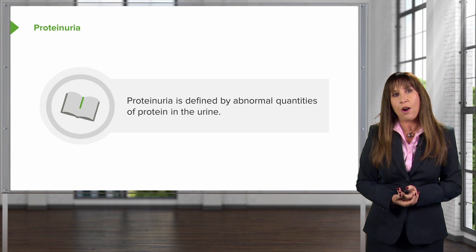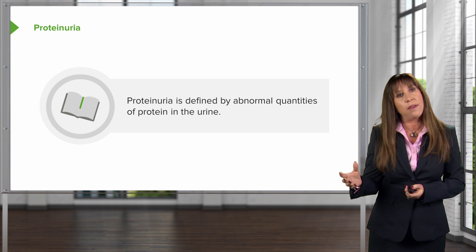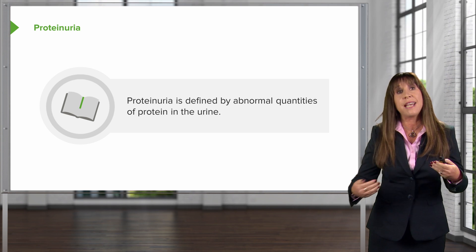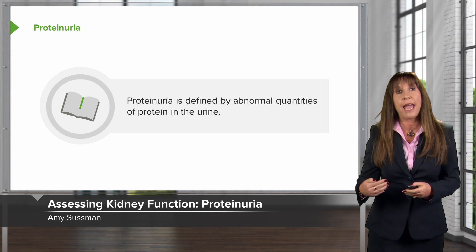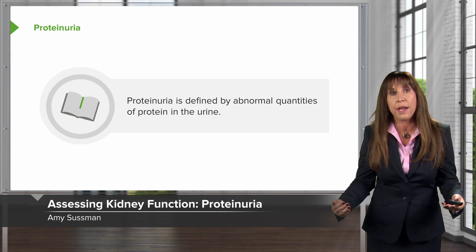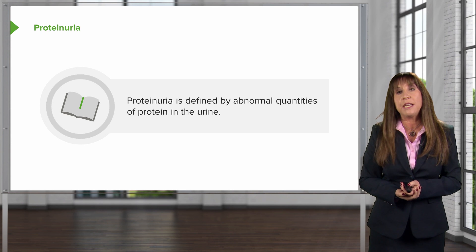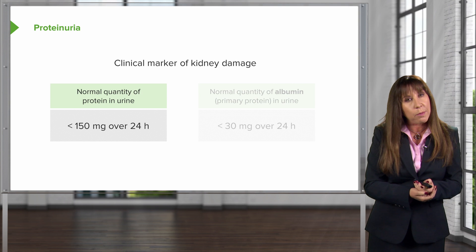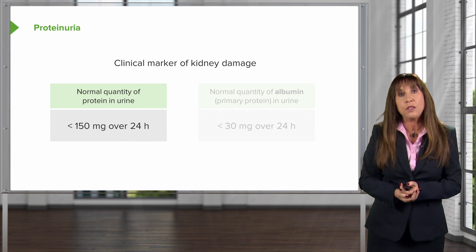We talked about assessing GFR and measuring kidney function that way, but there's another way we can also assess kidney function, and that is by looking at proteinuria — that's protein in the urine. It's defined by abnormal quantities of protein in the urine, and this is a clinical marker of kidney damage.